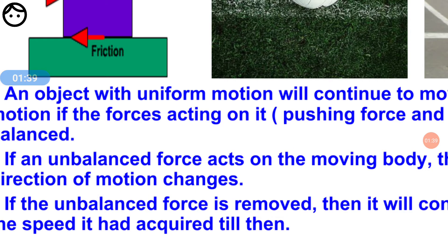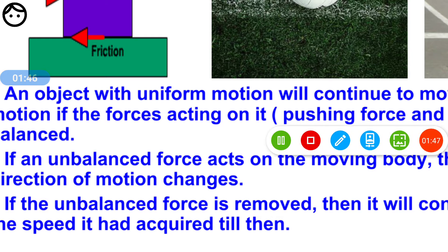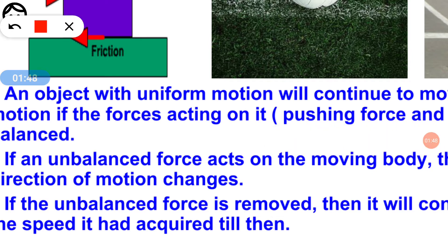The force of friction acts in the opposite direction. Now, if we see the land, which appears smooth, it is actually not smooth. If we see it from the microscope, we can observe the irregularities on its surface.